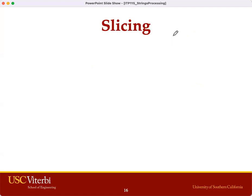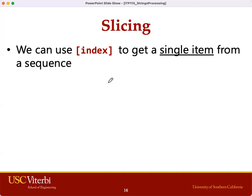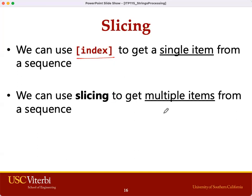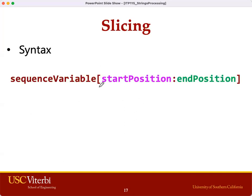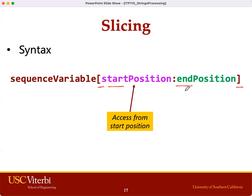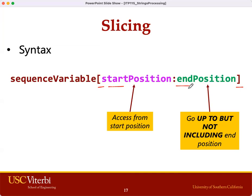Slicing is a technique that allows us to get multiple items from a sequence or a string. With slicing, we use the same square bracket operator; however, we're going to be able to get multiple items instead of just a single item. Instead of using a single index value in the square bracket, we have the start position and the end position of a slice. This allows us to get multiple items starting at the start index, up to but not including the end index or position.